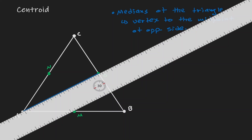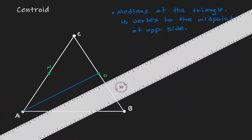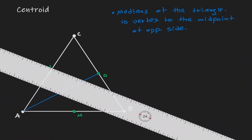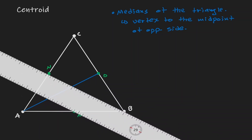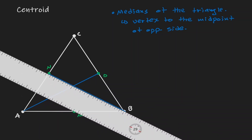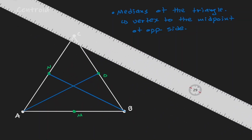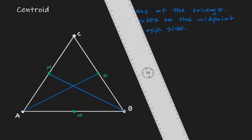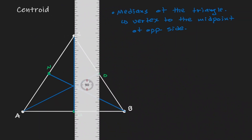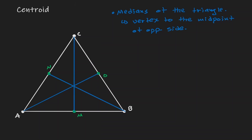Now let's draw our next median. Let's connect point B to N — that's another median connecting the vertex to the midpoint. And lastly, let's connect C to M. Notice that all medians intersect at a point.